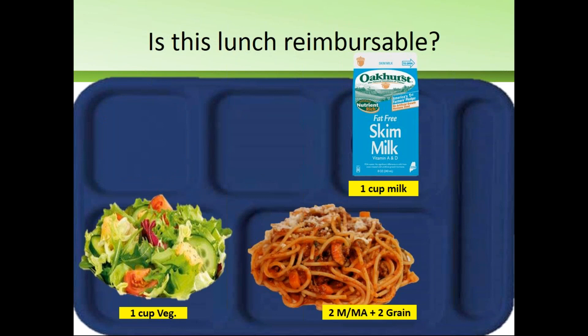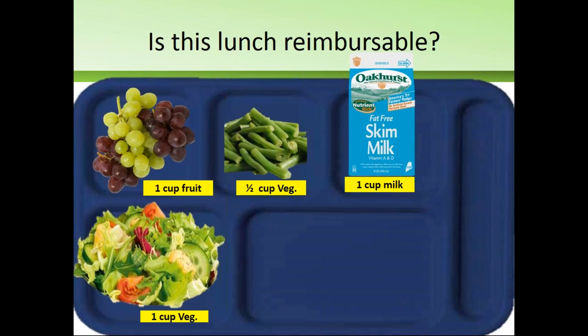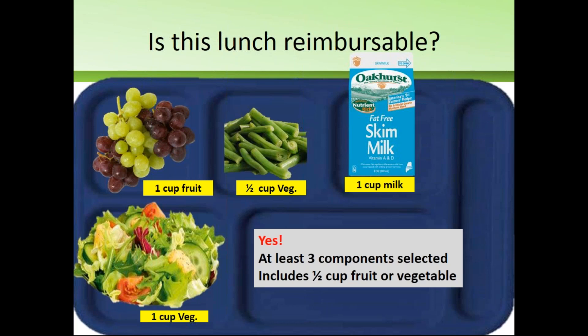The next student takes the spaghetti with meat sauce, the one cup of lettuce (a half cup serving vegetable), and a cup of milk. This is reimbursable — at least three different components were selected, including a half cup fruit or vegetable. The following student has a cup of milk, a half cup green beans, the one cup of salad contributing a half cup serving, and a cup of fruit. Again yes — three different components selected: fruit, vegetable, and milk, with a half cup fruit included.